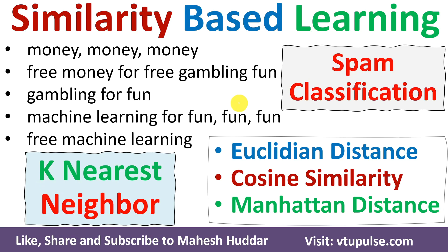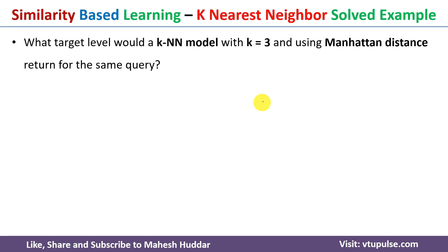Welcome back. In the previous video I discussed how to do spam classification using a similarity-based or K-nearest neighbor algorithm using Euclidean distance as well as weighted Euclidean distance — the link for that video is given in the description below. In this video I will discuss how to do spam classification using cosine similarity and Manhattan distance.